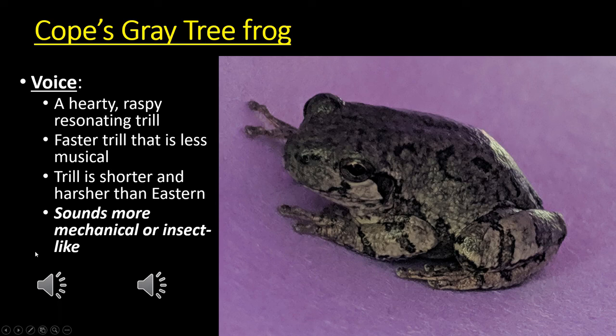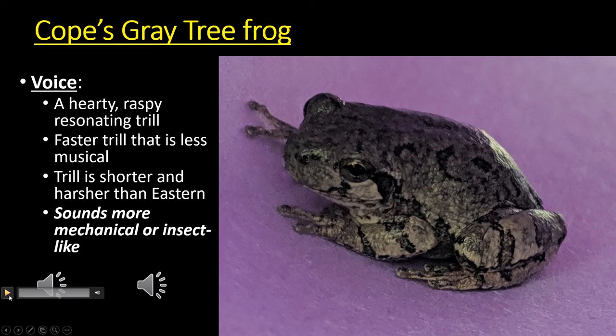The gray tree frog is the last species to breed in North Dakota — it tends to breed later in the year. Their tadpoles develop a beautiful red coloration when they sense predators in the wetlands. Their call is a raspy, resonating trill. The eastern gray tree frog's trill is more musical and bird-like; the Cope's gray tree frog's trill is less musical, a little harsher or more raspy — more insect-sounding or mechanical-sounding.